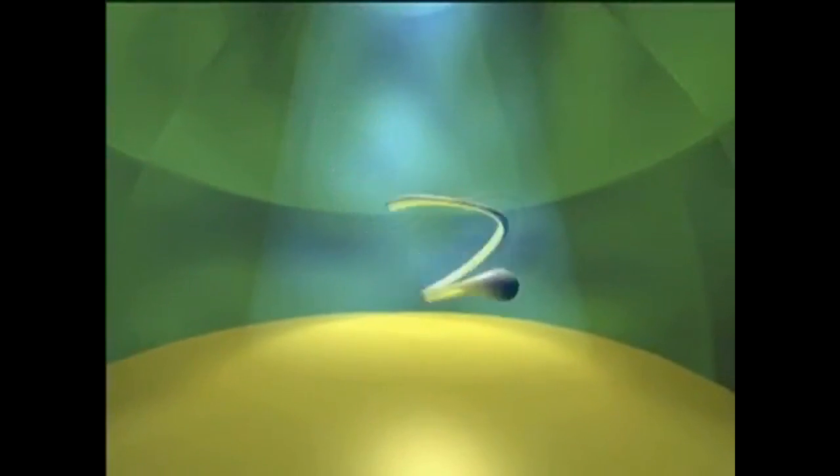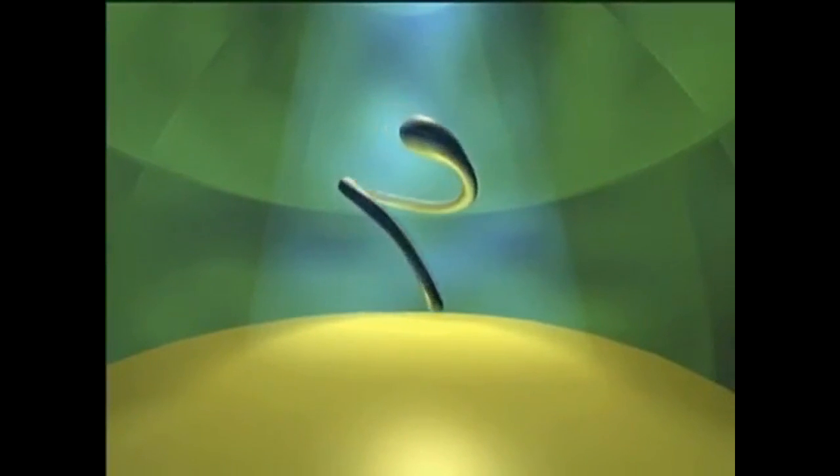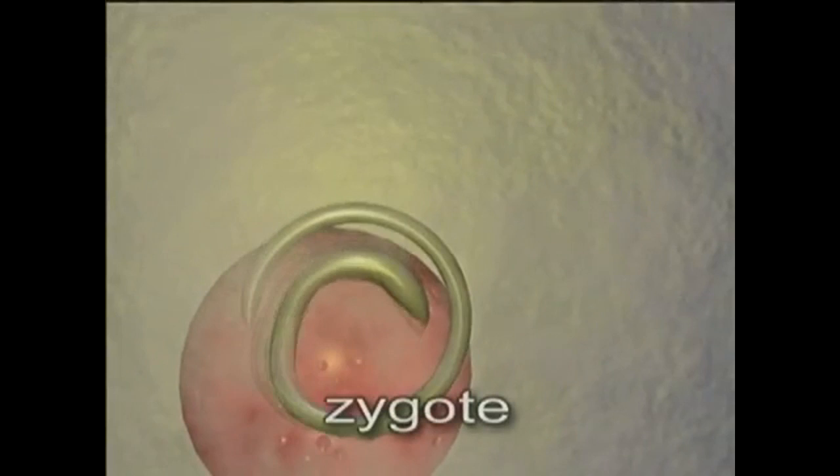Once inside, they are guided down to the egg. The first sperm to arrive enters the egg cell. Fertilization is completed when the sperm and egg nuclei fuse, creating a diploid zygote.